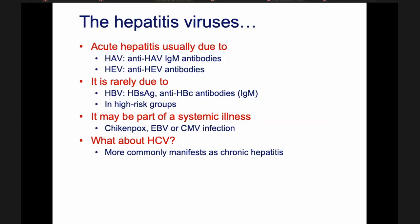With regard to hepatitis viruses in Sri Lanka, the commonest causes are hepatitis A virus and hepatitis E virus, both fecal-orally transmitted. For hepatitis A, we do anti-HAV IgM antibodies, and for hepatitis E, we do anti-HEV antibodies. Rarely it is due to hepatitis B, tested by hepatitis B surface antigen or anti-HBc IgM antibodies, and that's normally seen in high-risk patients prone to blood, body fluid, and sexually transmitted infections. Hepatitis C virus is very uncommon in Sri Lanka, and even when present, it usually presents as chronic hepatitis, not acute.